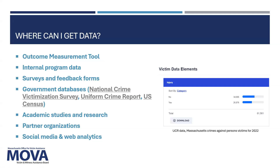Now we're going to talk about where you can get data. There are a number of data sources available to you. The first one is your OMT. Everybody here has access to their OMT data on eGrants — that will be your outcome data for the past two years. You should have your older records in an Excel file as well. You can also look at internal program data by asking around at your agency. Anything that records client demographics, services, outcomes, and impact metrics can all be useful.